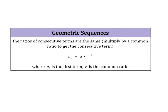The formula is a sub n equals a sub 1, meaning the first term, times r to the n minus 1, where r is the common ratio. It is really important to follow order of operations here. A lot of times people want to multiply these two values, but r is being raised to an exponent, so you can't multiply them until you've taken care of the exponent.